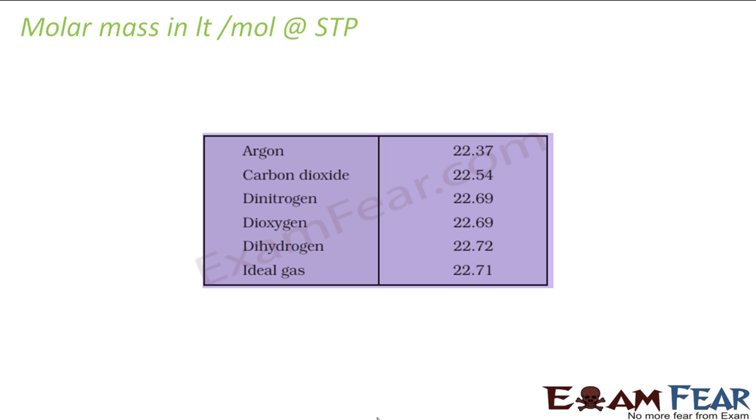So here is the molar mass in liters per mole for some of the gases at standard temperature and pressure: argon, carbon dioxide, dinitrogen, dioxygen, dihydrogen, and ideal gas. For ideal gas, it is 22.71 liters per mole. We have studied that. And for other gases, if you see, for dihydrogen it is 22.72, almost close. Dioxygen also, almost close. So all these gases are almost close to the ideal gas.